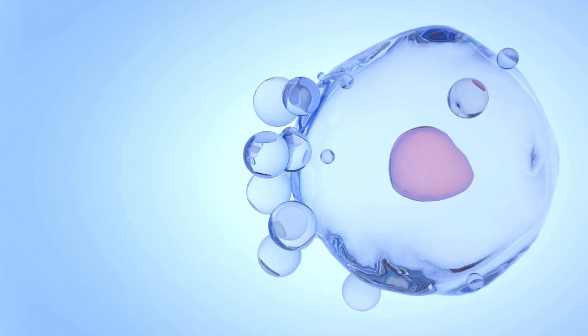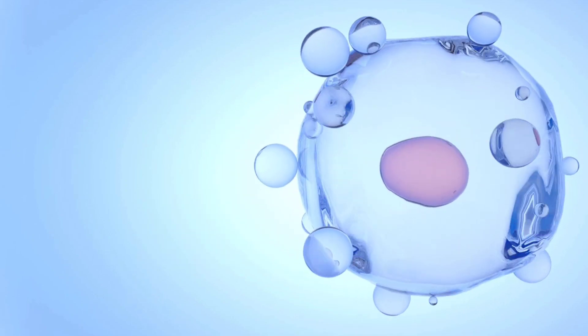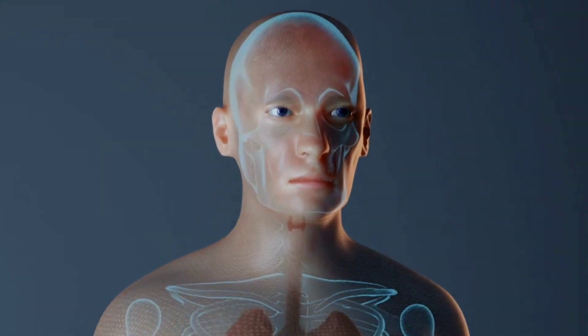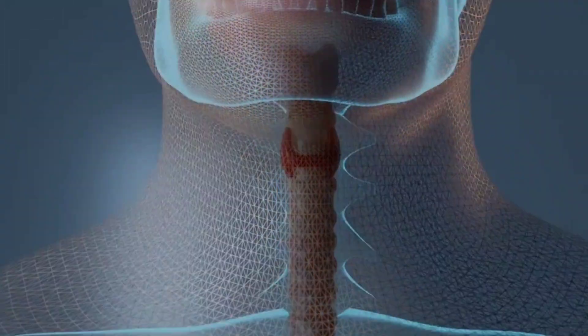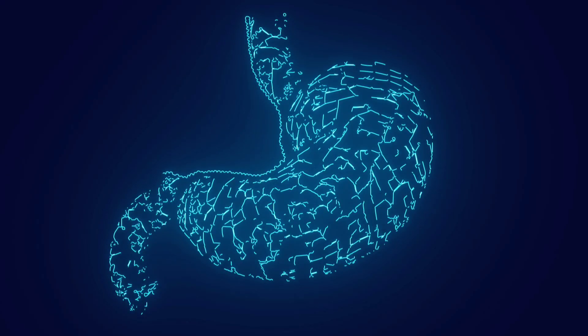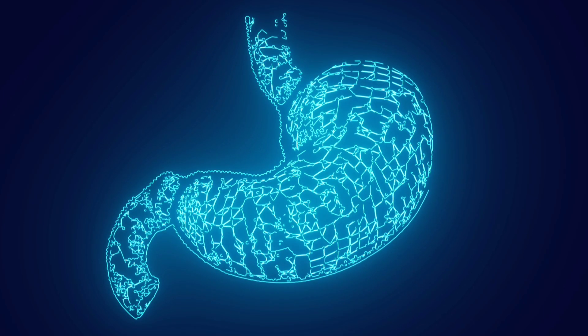This innovation addresses one of the biggest challenges in tissue printing: positioning cells correctly. Think of it like building a complex machine. Just as each part must be placed perfectly for the machine to work, cells in our tissues must also be precisely arranged.